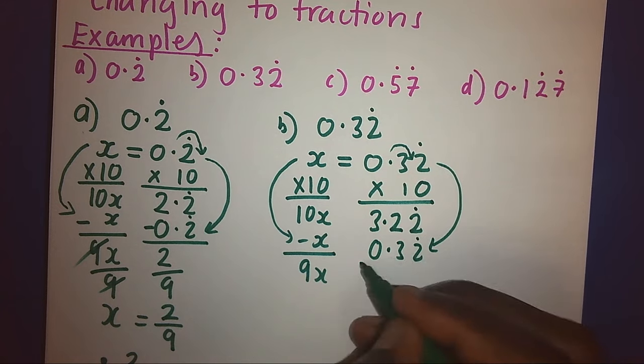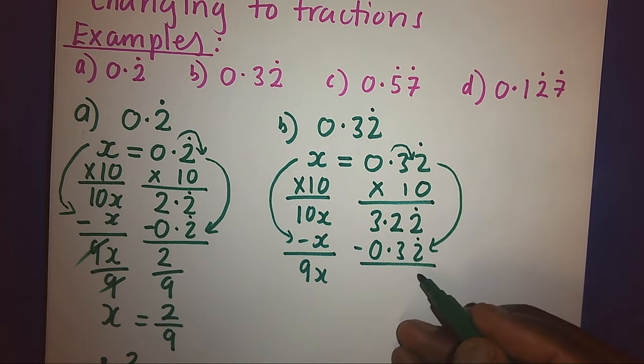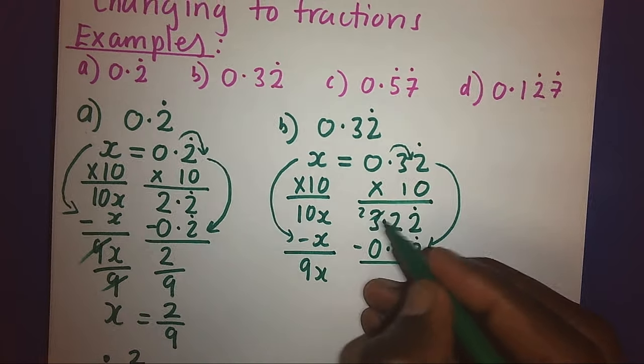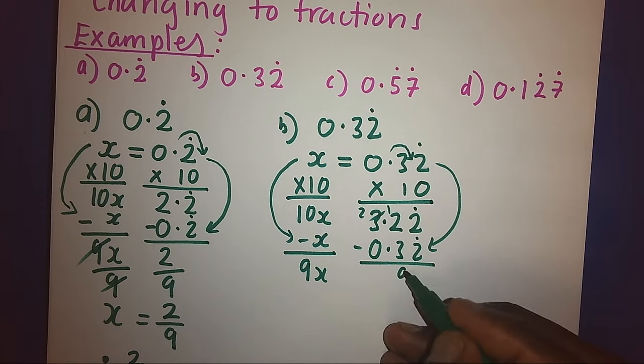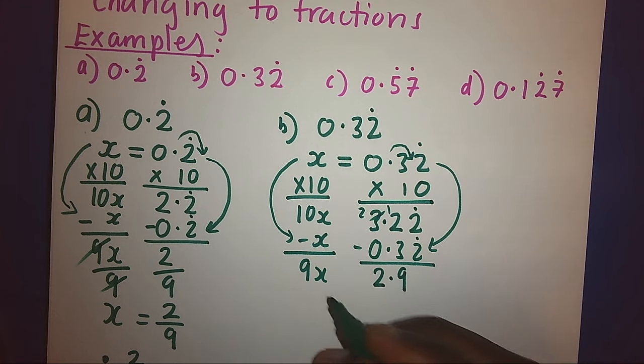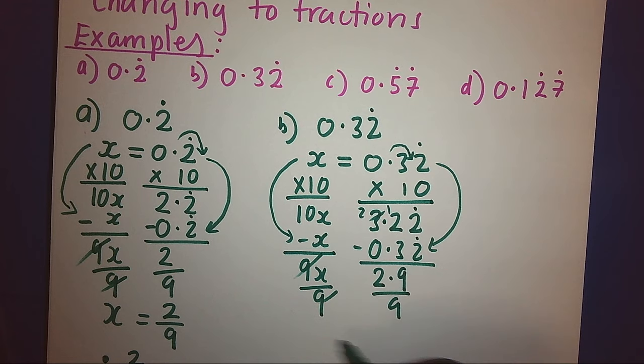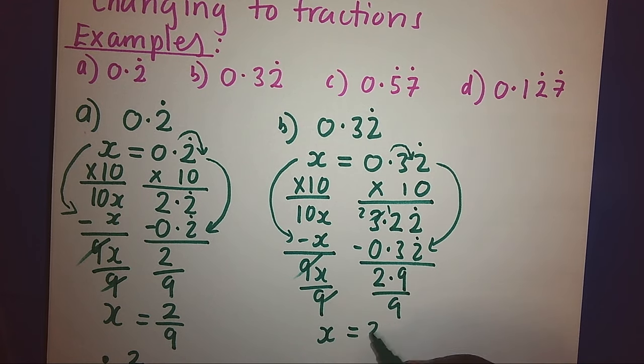And we shall get here 0. Here, borrow 1, become 12. 12 minus 3, you get 9, and this side, 2 minus 0 is 2. Hence, we shall divide both sides by 9, and our x will be 2.9 over 9.